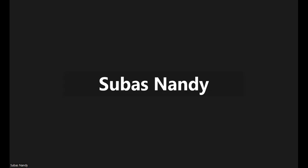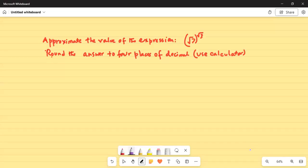So here is a problem we want to solve this morning. It says approximate the value of the expression square root of 7 raised to the power of square root of 3, round the answer to 4 places of decimal, use calculator.